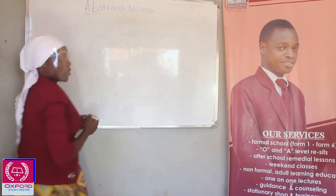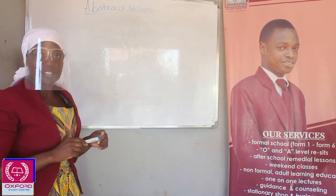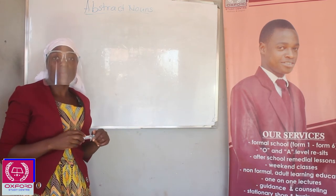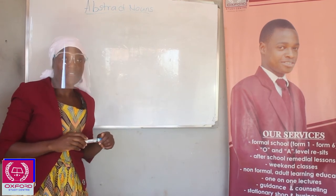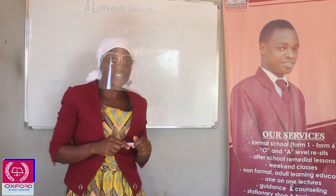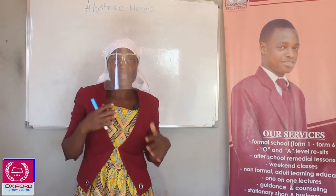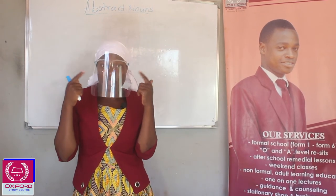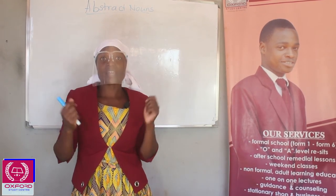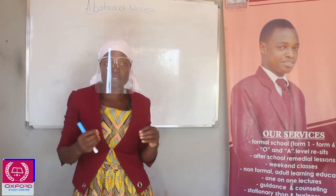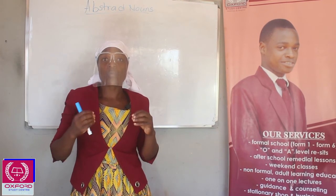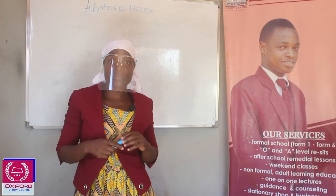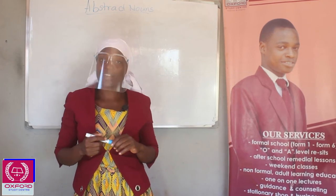Let's start by defining what an abstract noun is. An abstract noun is a name of a thing that you cannot see with your eyes, that you cannot touch with your hands, but which you can feel or think about.